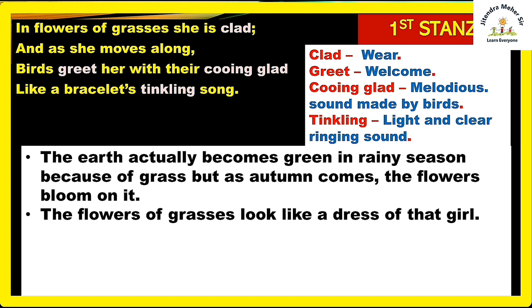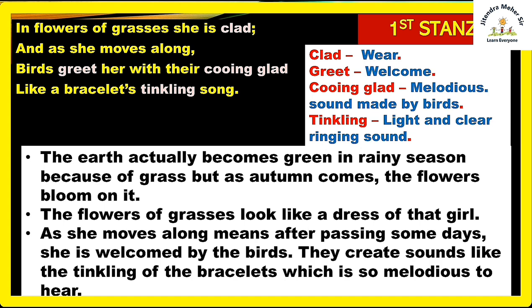As she moves along means as some days pass. She is welcomed by the birds — in this season birds start chirping; they create sounds like the tinkling of bracelets, which is very melodious to hear. This is the season when people go out for bird watching. So the first stanza shows us the day scene of autumn, where the poet sees a beautiful girl in nature, and nature's phenomena are making her more beautiful.